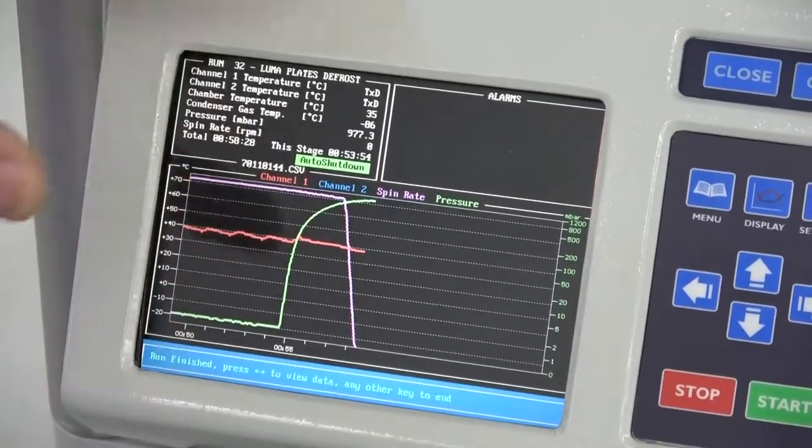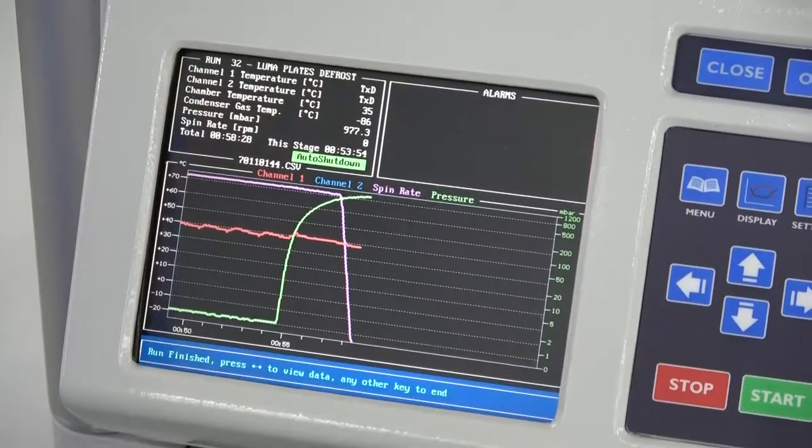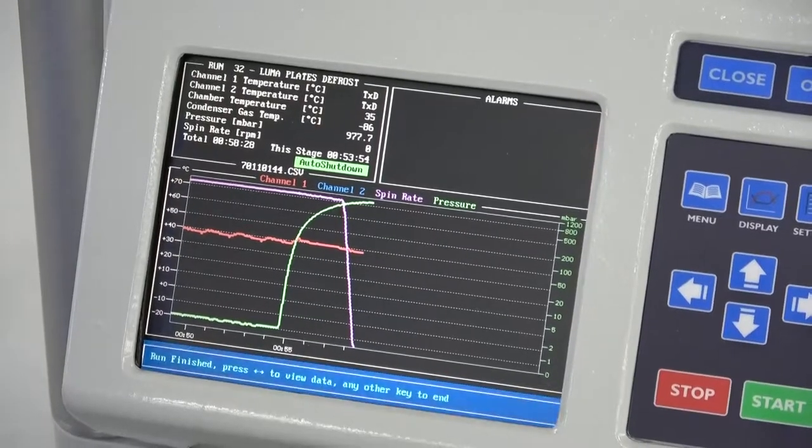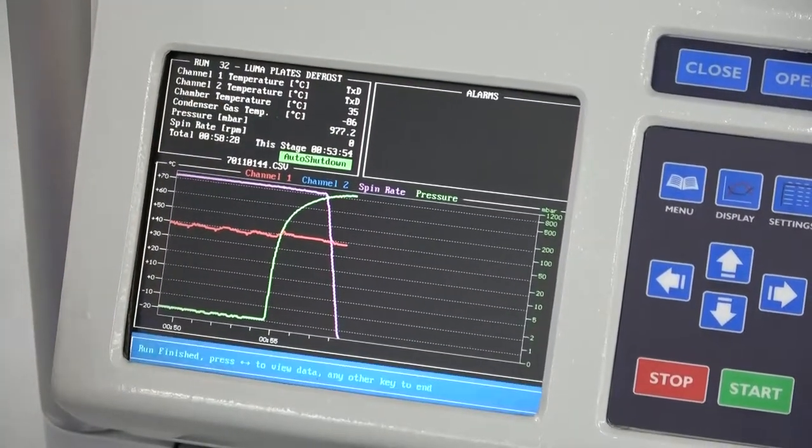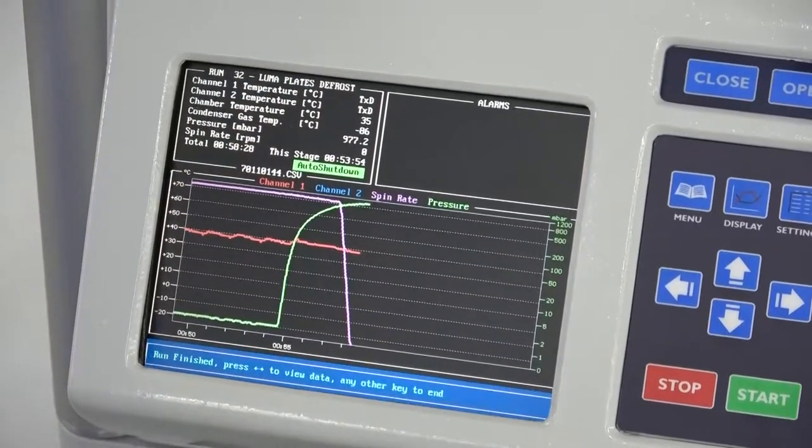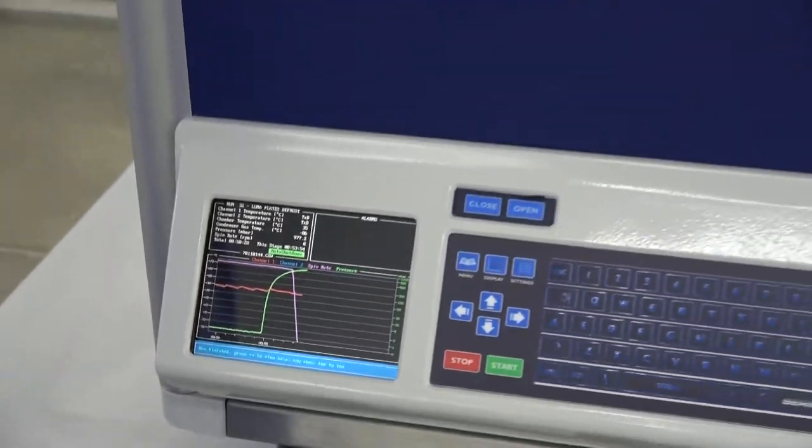So just a real nice crisp, clear chart there is really nice to look at. But you can see the vacuum is now released. And spinning is at zero in RPM. So the door is actually ready to open. We're going to take a look at the inside now.